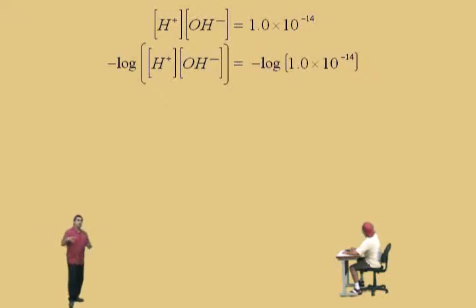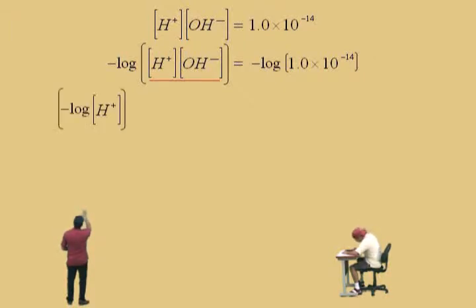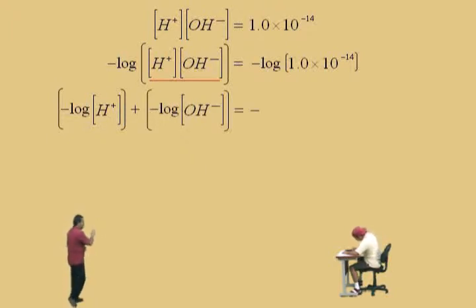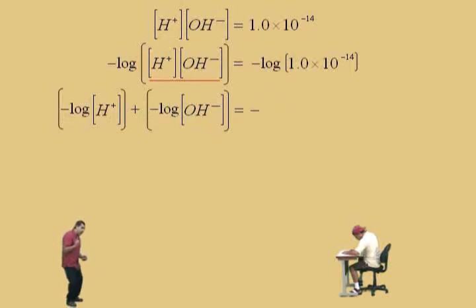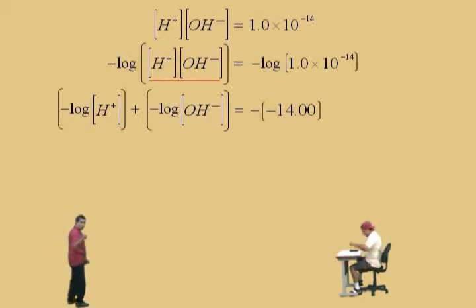From your math classes, remember the log of a product is the sum of the logs. So the log of hydrogen ion concentration times hydroxide ion concentration is a sum. We have negative log of the hydrogen ion concentration plus the negative log of the hydroxide ion concentration, which must equal the negative log of 1.0 times 10⁻¹⁴ — the ion product constant. Get your calculator out, Charlie, and calculate log base 10 of 1.0 times 10⁻¹⁴. You get negative 14. Very good — so our right-hand side becomes positive 14.